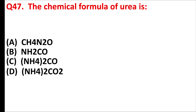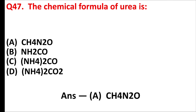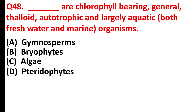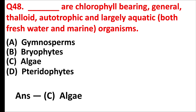The chemical formula of urea is — answer is option A: CH4N2O. Algae are chlorophyll-bearing, autotrophic, and largely aquatic (both freshwater and marine) organisms — answer is option C: algae.